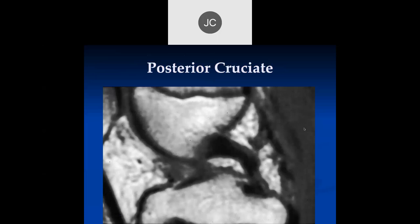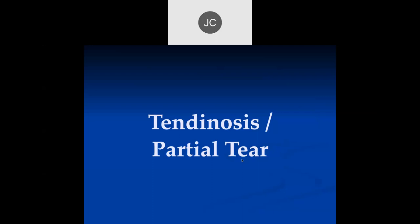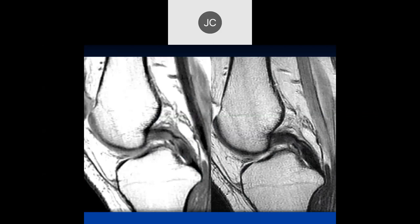Let's go on to the posterior cruciate ligament. We can look at tendinosis and partial tearing. Looking at the PCL, it looks like it's intact with increased signal, so we've got some tendinosis.